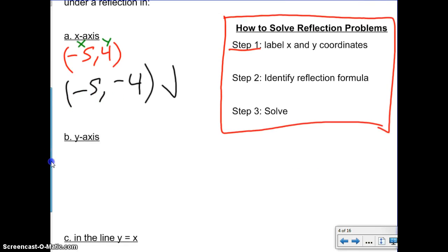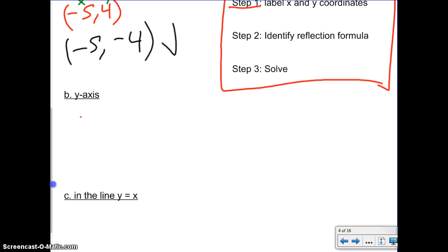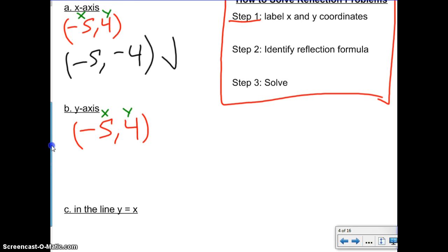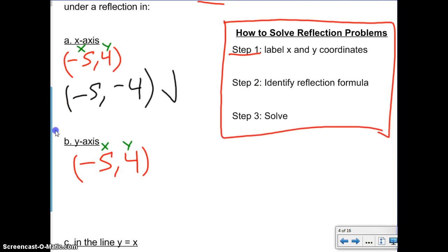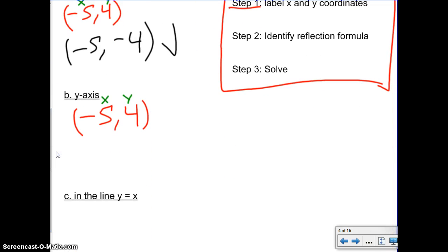Let's look at part b, reflection in the y-axis. Our point again was (-5, 4). We label our x and our y. Now we go back to our notes. For reflection in the y-axis, it says we negate the x. So for this one, we're going to negate the x—that's a negative and it's a negative five. Don't forget both signs there, and the y stays the same. We never leave two negatives; that doesn't look right. So we know that can be written as (5, 4), because two negatives make a positive.